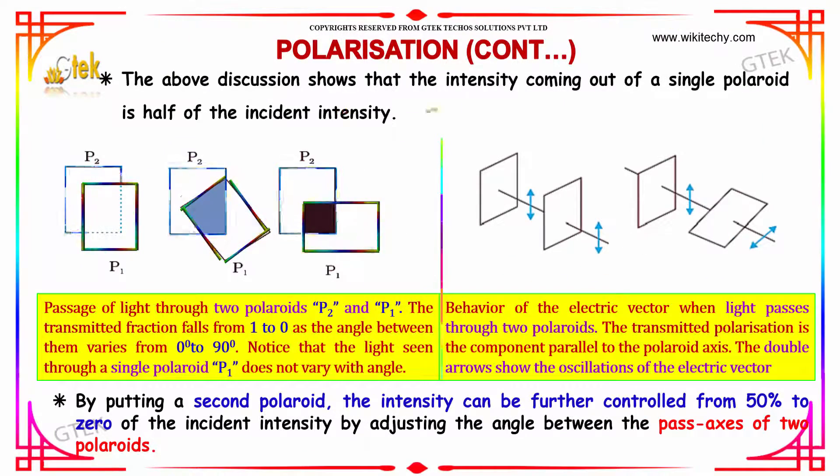The above discussion shows that the intensity coming out of a single polaroid is half the incident intensity. By putting a second polaroid, the intensity can be further controlled from 50% to 0 of the incident intensity by adjusting the angle between the pass axis of two polaroids.